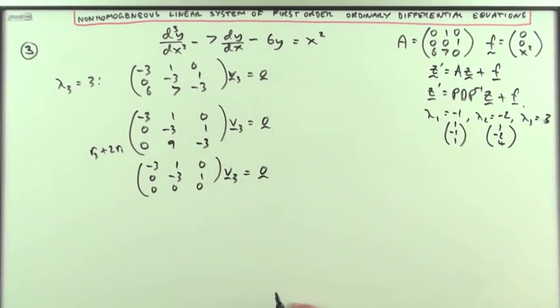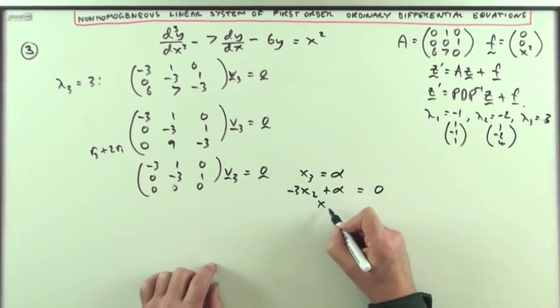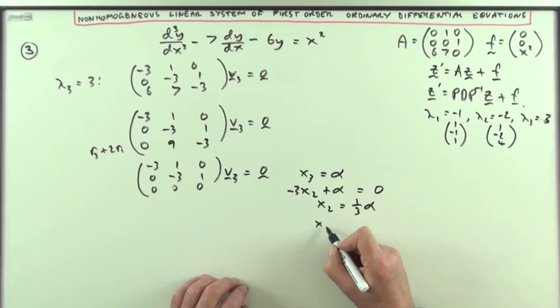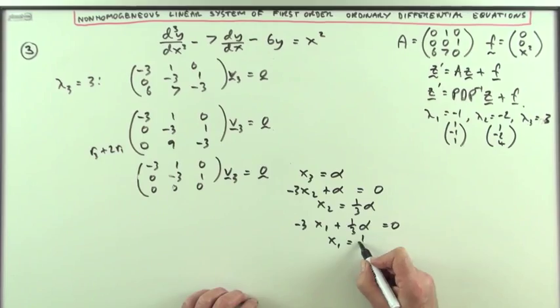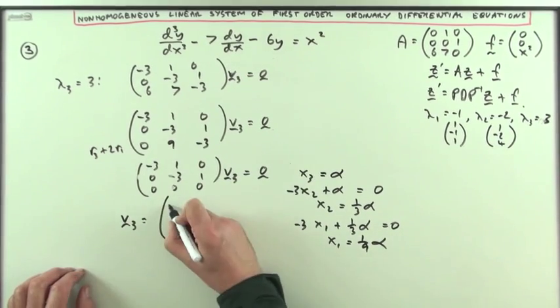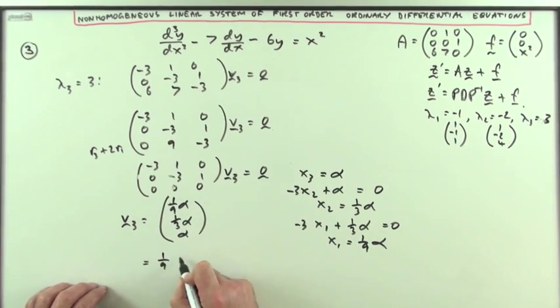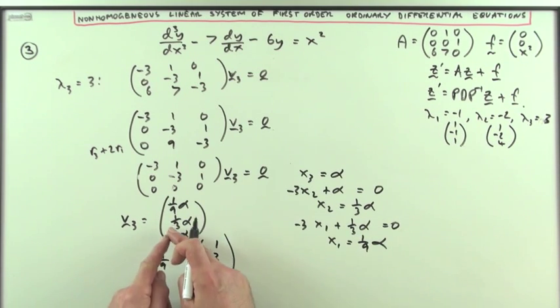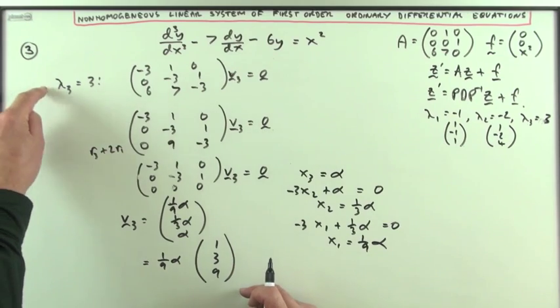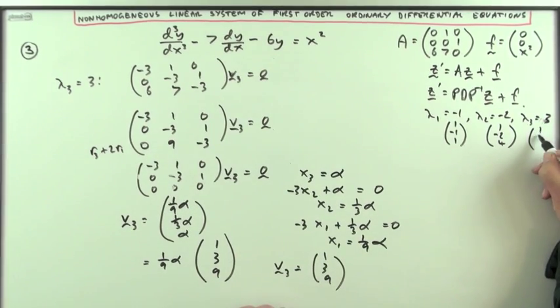They're determined by x3 being a free variable which I can call alpha. Then negative 3x2 plus an alpha would equal 0, so x2 would be negative divided by negative will be 1 third of alpha. And negative 3x1 plus this thing, plus 1 third of alpha, should equal 0. So taking that cross negative divided by negative gives me x1 equals 1 ninth of alpha. So that V3 is made up of this set of vectors: 1 ninth of alpha, 1 third of alpha, alpha. Taking out the nastiest of the fractions and the alpha, so take out 1 ninth alpha, leaves me with a 1, 3, 9. So 1, 3, 9 forms a basis which will span this set of vectors, which is eigenspace corresponding to that eigenvalue. So I can choose V3 equal to 1, 3, 9. Take a note of it here.